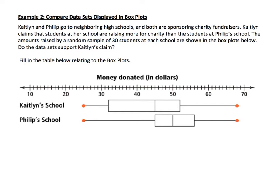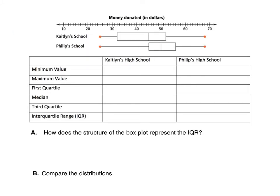In this example we're going to compare data sets displayed in box plots. Kaitlyn and Phillip go to neighboring high schools and both are sponsoring charity fundraisers. Kaitlyn claims that students at her school are raising more for charity than the students at Phillip's school. The amounts raised by a random sample of 30 students at each school are shown in the box plots. Do the data sets support Kaitlyn's claim? Let's look at the key values from the box plots to help decide.